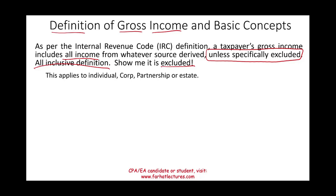For example, interest on municipal bonds is excluded. If you buy a bond from a local or state municipality, you earn interest from that bond, and that interest is specifically excluded as far as the IRS is concerned. Municipal bonds are explicitly stated as excluded. The key point is: if income is not explicitly excluded, it's included.